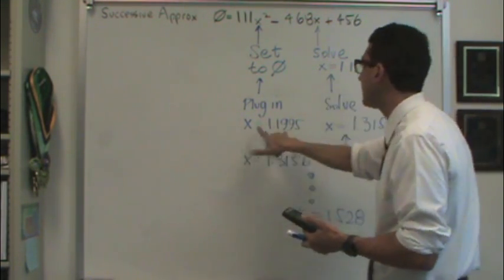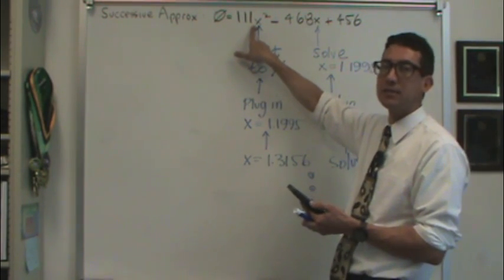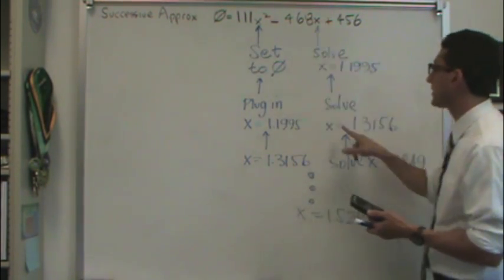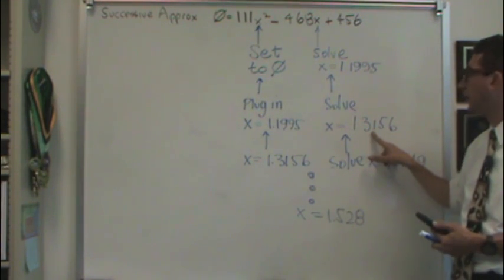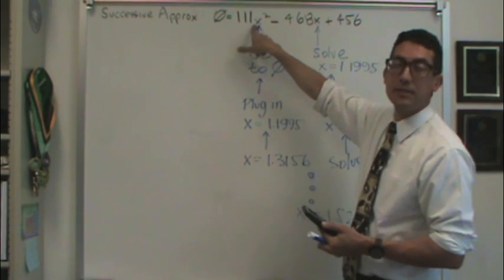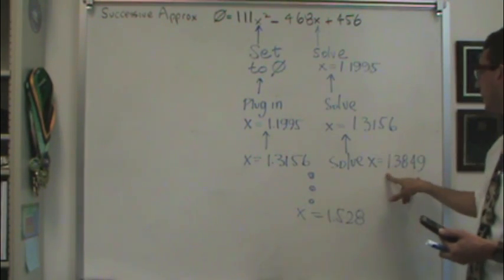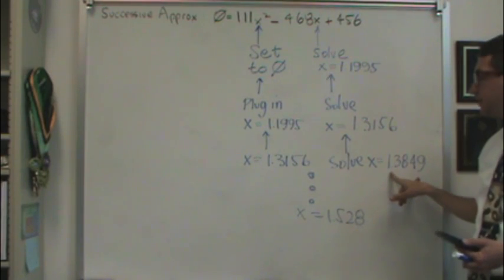So I solved for that, and then I put that number in here instead of zero the second time. And then I solved for this x again, and I got this number. And you can try this on your calculator. Then I took this number, and I plugged it in here again. And I solved for this x, and I got this 1.3849 number.